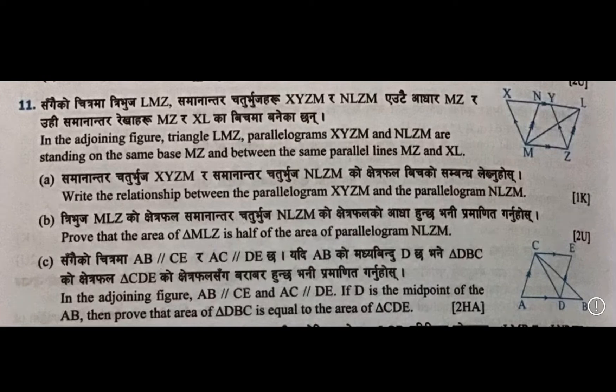Today I am going to teach you one question related to SE modal, question number 11. The question is: in the adjoining figure, triangle LMZ, parallelograms XYZM and NLZM are standing on the same base MZ and between the same parallel lines MZ and XL. Part A: write the relationship between parallelogram XYZM and parallelogram NLZM. Part B: prove that the area of triangle NLZ is half of the area of parallelogram NLZM.